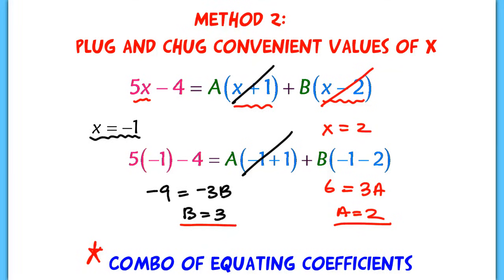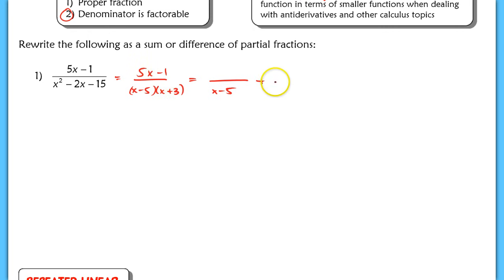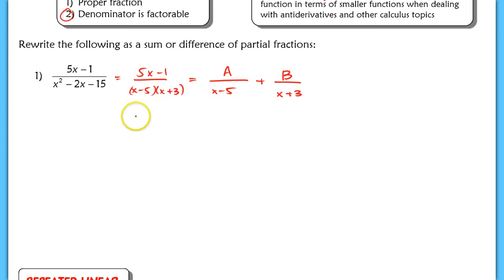Let's try problem number 1. We factor the denominator into x minus 5 and x plus 3, keep the numerator the same, and rewrite as partial fractions: A over x minus 5, plus B over x plus 3. Multiplying throughout by the denominator, the left side becomes 5x minus 1, and the right side becomes A times x plus 3 plus B times x minus 5.